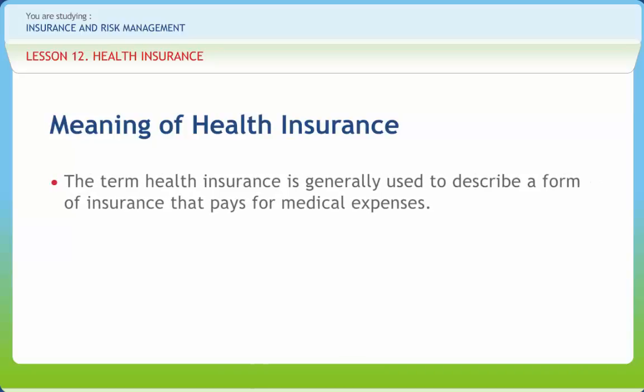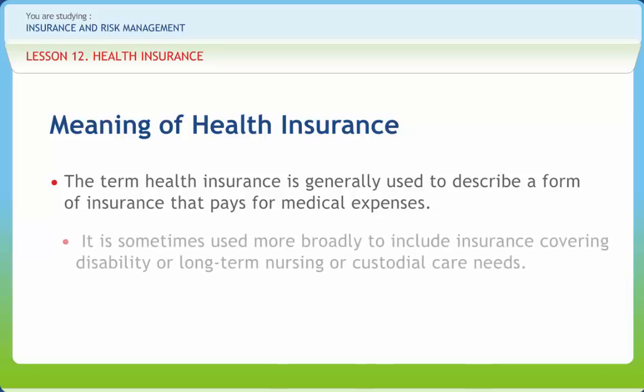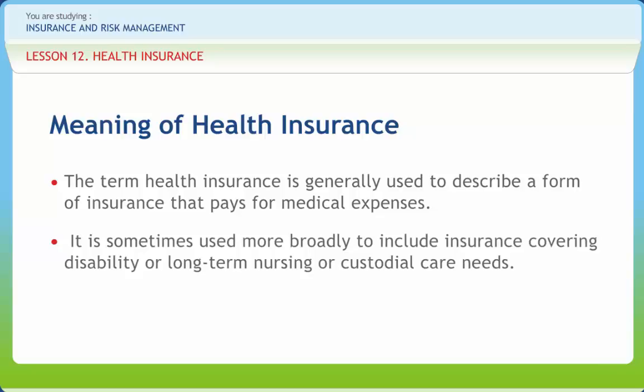The term health insurance is generally used to describe a form of insurance that pays for medical expenses. It is sometimes used more broadly to include insurance covering disability or long-term nursing or custodial care needs. It may be provided through a government-sponsored social insurance program or from private insurance companies. The contract may be renewable annually or monthly, and the type and amount of health care costs covered are specified in advance.